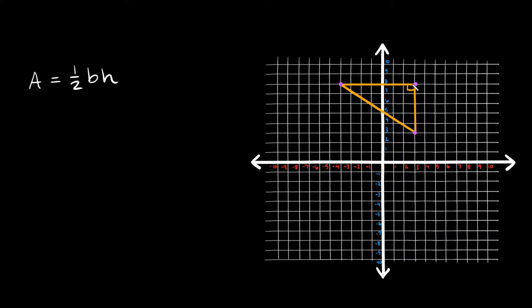Because as you can see, the base right here would just be this horizontal side. So the base — how long is the base? Well it's one, two, three, four, five, six, seven. So it's seven units long. And then the height would be right here — one, two, three, four, five. So it's five.